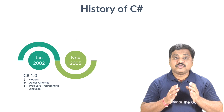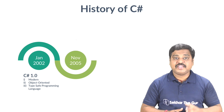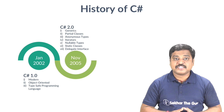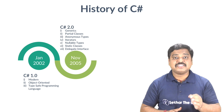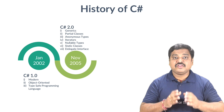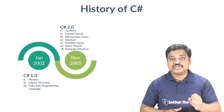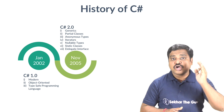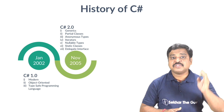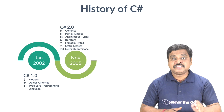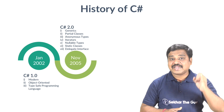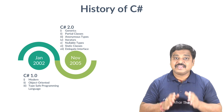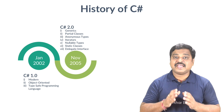In November 2005, C Sharp 2.0 was released with many new features such as implicitly typed local variables, object and collection initializers, auto-implemented properties, and anonymous types.